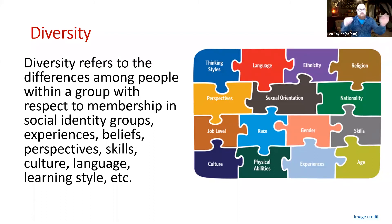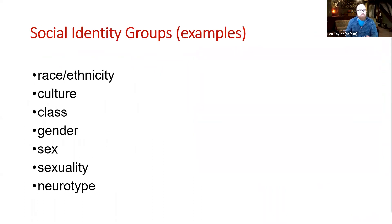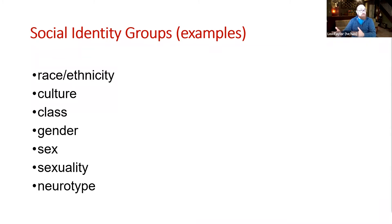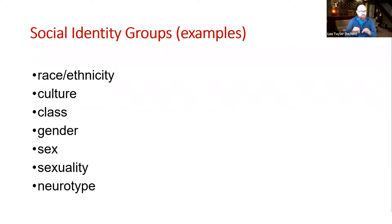Some social identity group examples: you're familiar with race and ethnicity — two separate things, often confused. Race refers to these arbitrary biological features we've created to categorize people, such as skin color and hair type. Ethnicity refers to culture — so you can be French ethnically and Black, or French ethnically and white. Culture is embedded in the ethnicity part, but we often get those two confused.